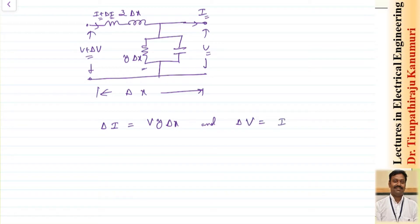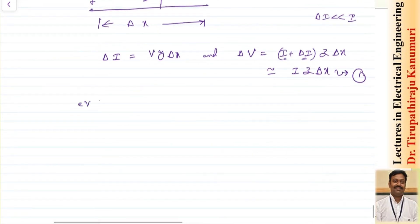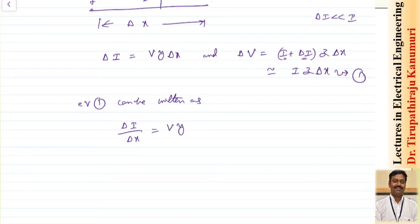Similarly, the change in voltage delta v comes from the current passing through z·delta x. Since the value of delta i is far less than i, delta i can be neglected, so delta v equals i·z·delta x. This gives us equation one. From this we can write delta i / delta x = v·y, and delta v / delta x = i·z — this is equation two.